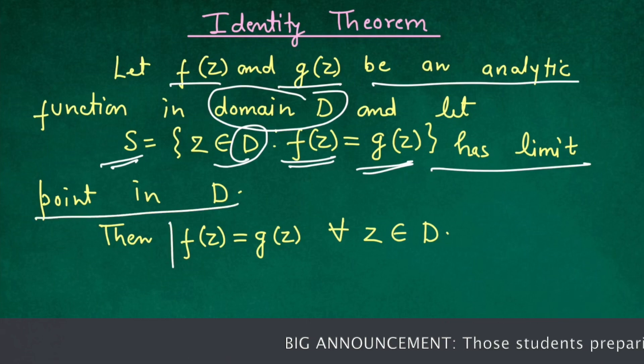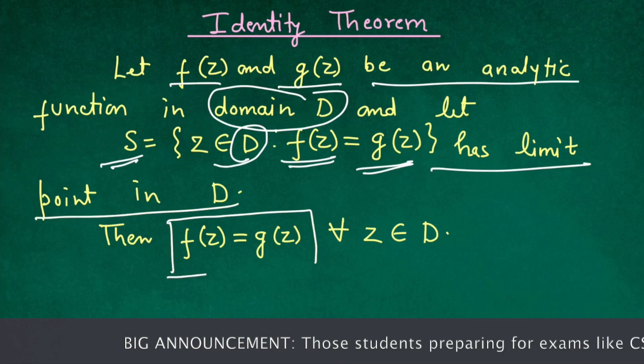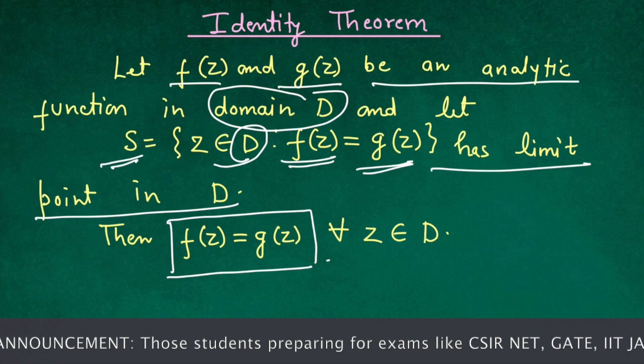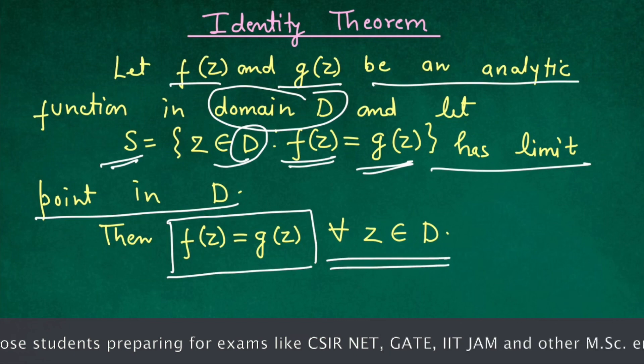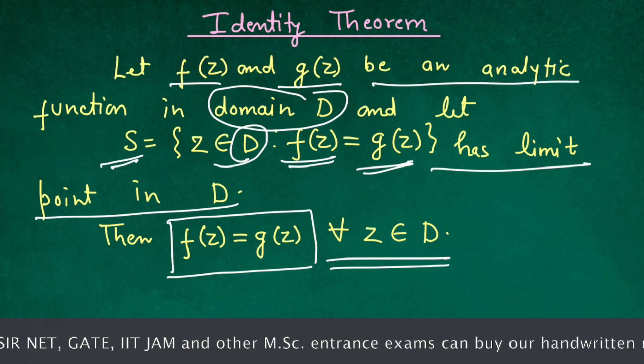Then f(z) equals g(z) for all z belongs to D. That means f(z) and g(z) are same functions.